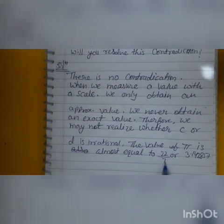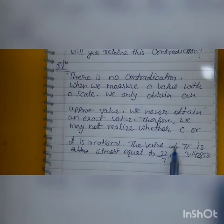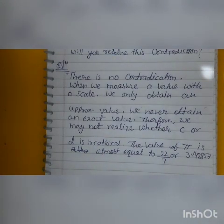We know that the value of Pi is almost equal to 22 upon 7 or 3.14. With the values of C or D we measure, we cannot say anything about whether they are rational or not.